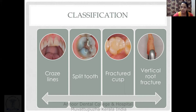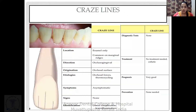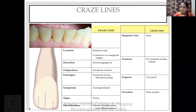Depending on the type and extent of fracture, the clinical conditions can vary: craze lines, fractured cusp, cracked tooth, split tooth, or vertical root fracture. Craze lines are a type of fracture restricted to the enamel itself, running in an occlusal-gingival or incisal-gingival direction.